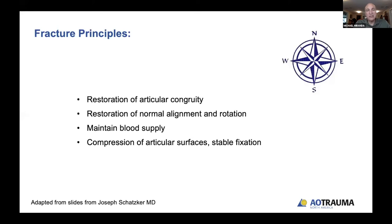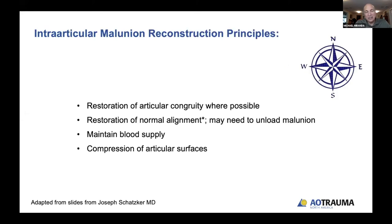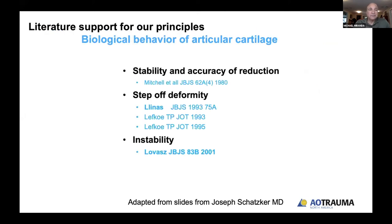In the situation of intra-articular malunions, it's a little bit different. What we want to do is restore articular congruity wherever possible, restore normal alignment, and we may need to unload that malunion. We need to maintain the blood supply and make sure we get compression of articular surfaces. There's plenty of literature extending back a number of years which creates support for this intervention.